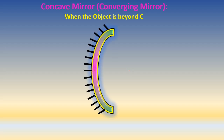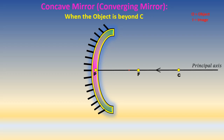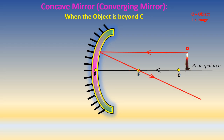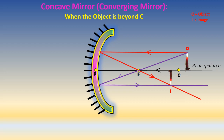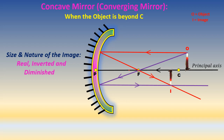Concave mirror, or converging mirror, when the object is beyond C. This is the principal axis. P is the pole of the mirror, F is the focus, and C is the center of curvature. The first ray goes parallel to the axis and passes through the focus. The second ray passes through the focus and becomes parallel to the axis. The image is formed. Size and nature of the image: real, inverted, and diminished.